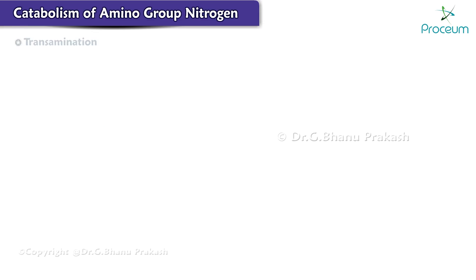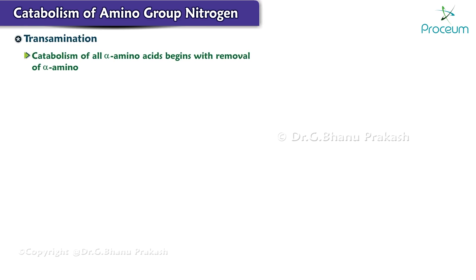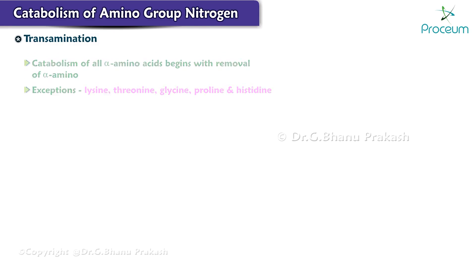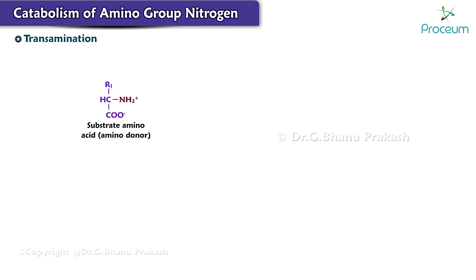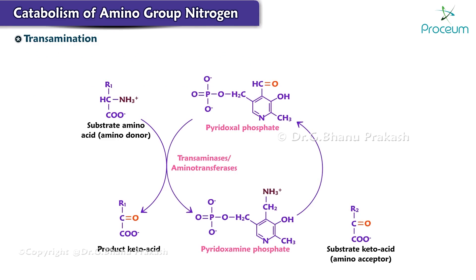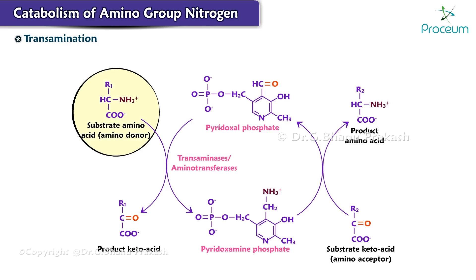Starting with transamination: catabolism of all alpha amino acids begins with the removal of the alpha amino group by a process called transamination. The only exceptions are lysine, threonine, glycine, proline, and histidine. In a transamination reaction, an amino group from an amino acid is transferred to an alpha keto acid, thus converting the alpha keto acid into a new amino acid. The original amino acid, after transferring its amino group, is converted to the corresponding alpha keto acid.